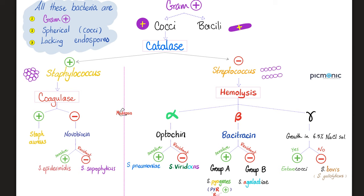What does catalase negative mean? You cannot catalyze the reaction of converting hydrogen peroxide into water and oxygen. Then, after you realize this is a streptococcus, the next question is: ask yourself about hemolysis. Is it alpha hemolytic, beta hemolytic, or gamma hemolytic? Alpha hemolysis means partial hemolysis on the petri dish. Beta means complete hemolysis. Gamma hemolysis means no hemolysis — partial, complete, or no hemolysis.